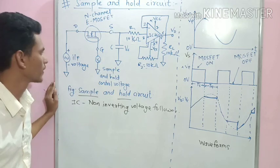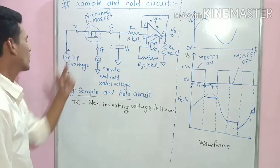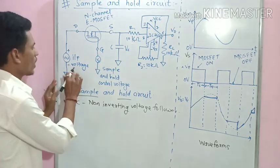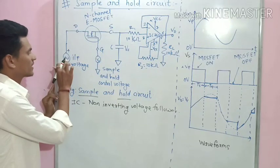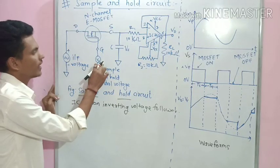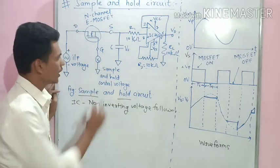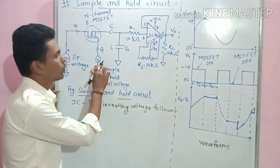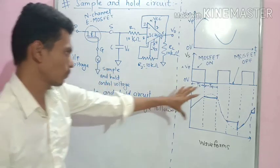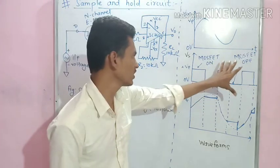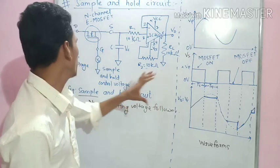Now we look at the working of this sample and hold circuit. There are two inputs given to the circuit: first is the input voltage which is a sine wave, and here basically a square wave is applied, as we go through this diagram.